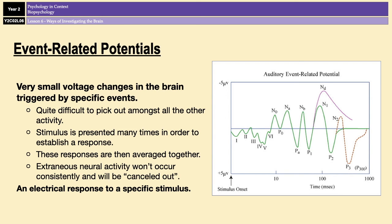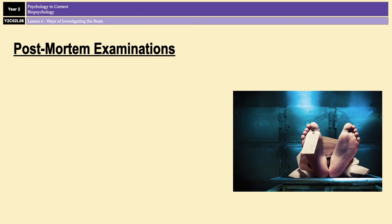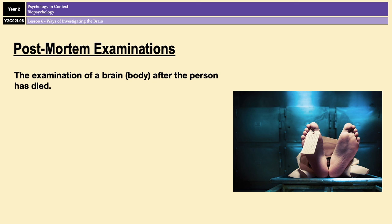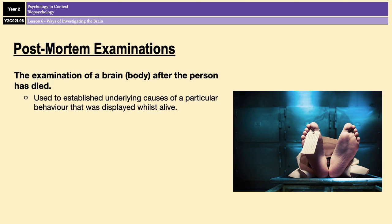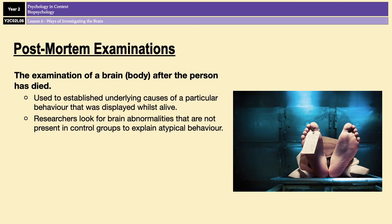Our final way of investigating the brain is post-mortem examinations. This technique involves the analysis of a person's brain following their death. In research, individuals subjected to a post-mortem are usually those who had a rare disorder and displayed atypical or unusual behavior — whether physical or mental — whilst they were still alive. The idea is to examine areas of damage within the brain to establish the likely cause of the unusual behavior, and in some cases that also involves using a control group: a neurotypical brain belonging to a deceased individual who did not display any unusual behavior whilst alive.